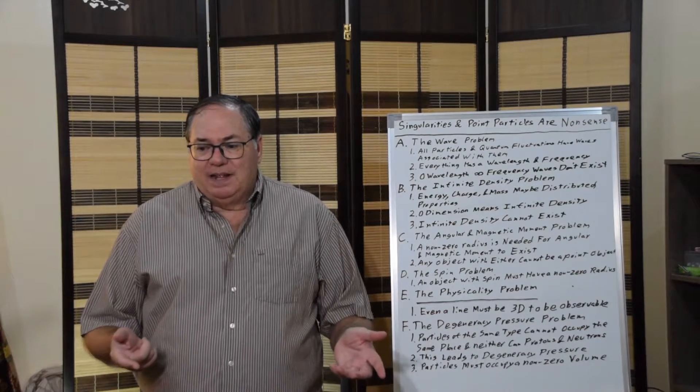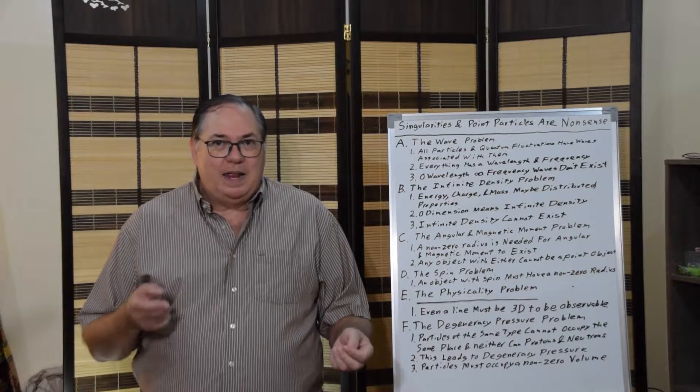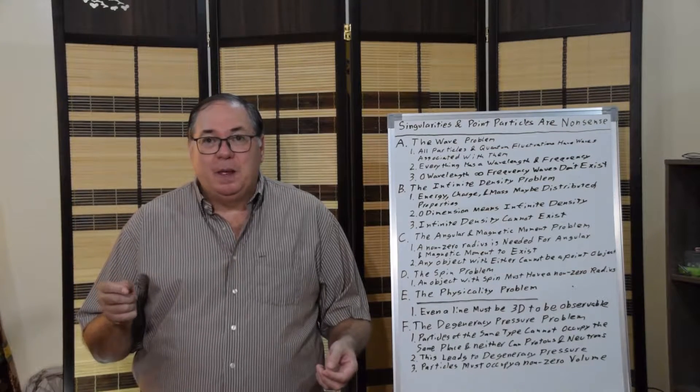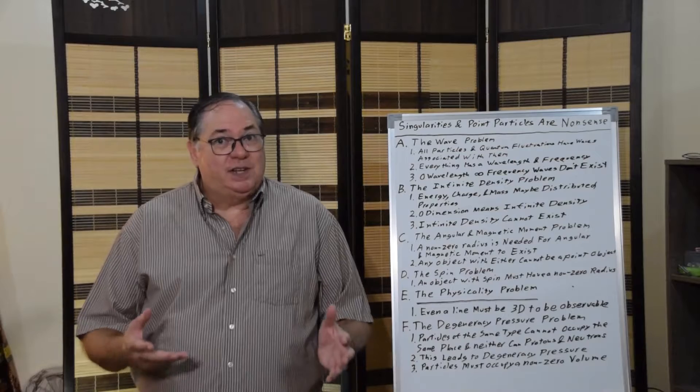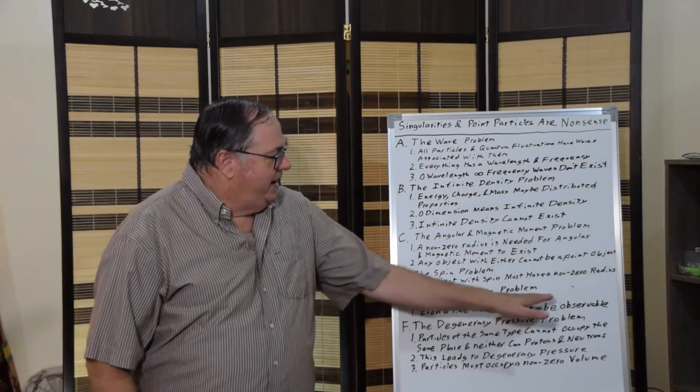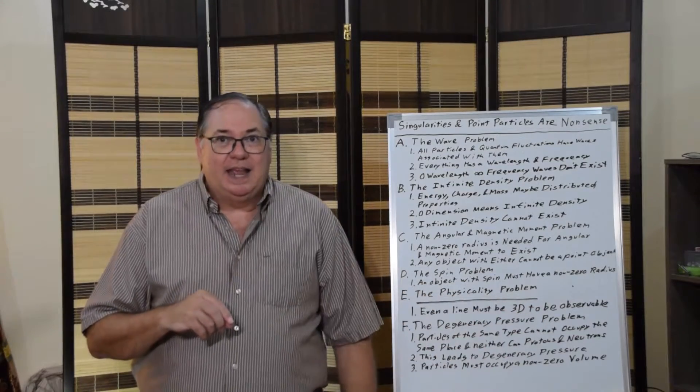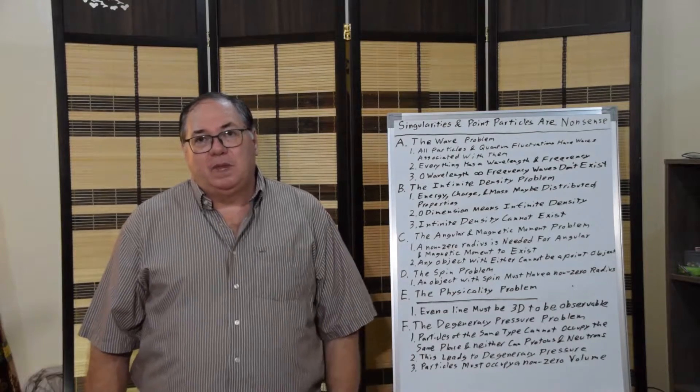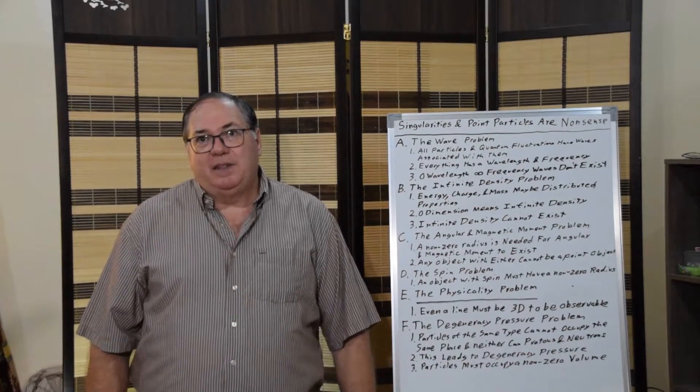Then we have the physicality problem. Any point or line, and you can try to draw one to see this is true, must be three-dimensional in order to be observed. So for it to be physically real and observable, it must be three-dimensional. If I draw a line in space like I drew here, in order to be observable it has to have width as well as length, and it also has to have depth, even if it's a few atoms deep. You can't get a visible line or visible point without it being a three-dimensional object.